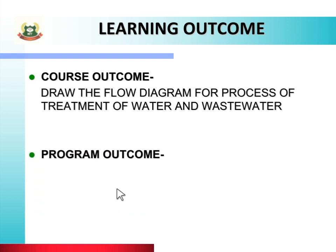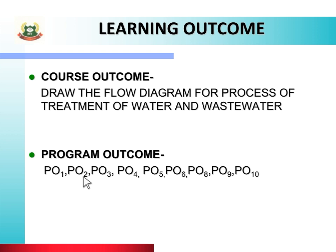Second is Program Outcome. Isme aata hai PO1, PO2, PO3, PO4, PO5, PO6, PO8, PO9, PO10 — jaise ki basic knowledge, discipline knowledge, experiments and practice, engineering tools, engineer and society, environment and sustainability, individual and teamwork, communication and lifelong learning. In sabhi POs ka use karke, aap yeh topic study karoge.